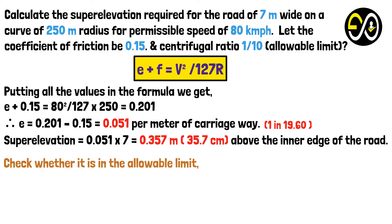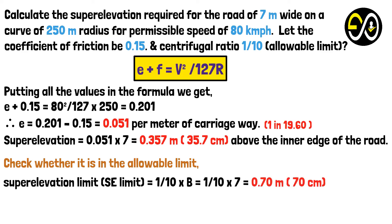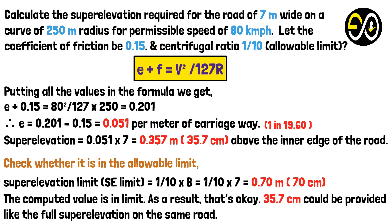Check whether it is in the allowable limit. Superelevation limit = 1/10 × width = 1/10 × 7 = 0.70 meters. The computed value is in limit. As a result, that's okay. 35.7 centimeters could be provided as the full superelevation on the same road.